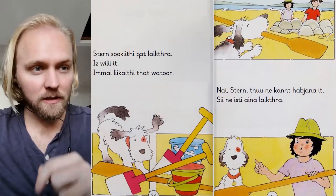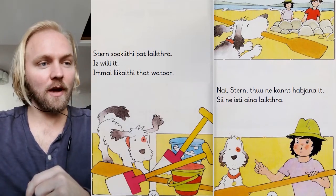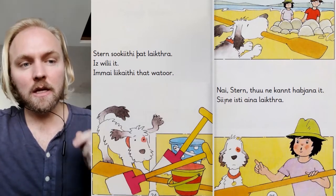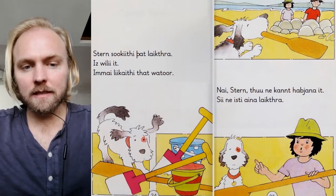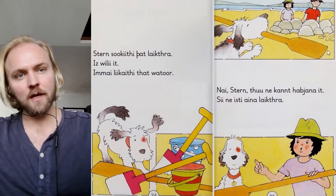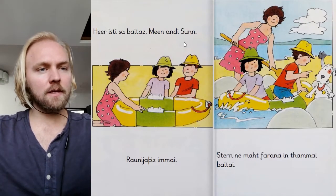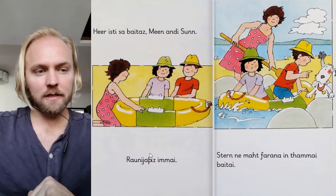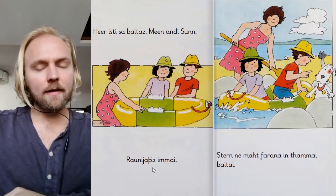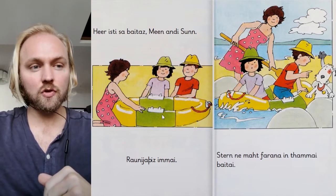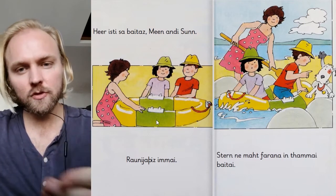Star seeks the toy — he wants it. He likes the water. 'No, star, you cannot have it.' She is not a toy — an oar is feminine in Proto-Germanic. So she is not a toy. Here is the boat — moon and sun. We learned 'ronny' last time, meaning 'try' — here's the dual imperative: 'ronny fish' — 'you two try it.' So you two try him, because it's a boat.